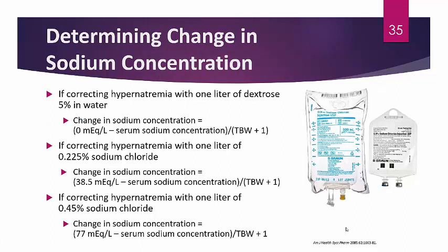When treating hypernatremia, you may need to determine a change in sodium concentration using formulas. For correcting hypernatremia with D5W: change = (0 − serum sodium) ÷ (TBW + 1). Pay close attention to where parentheses are — parentheses must be resolved before division. For 0.225% NaCl: change = (38.5 − serum sodium) ÷ (TBW + 1).